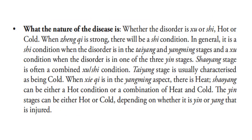What the nature of the disease is — whether the disorder is deficiency or excess, hot or cold. When zang qi is strong, there will be an excess condition. In general, it is an excess condition when the disorder is in the Taiyang and Yangming stages, and a deficiency condition when the disorder is on the three yin stages. Xiaoyang stage is often a combined deficiency-excess condition. Taiyang stage is usually characterized as being cold. When pathogenic qi is in the Yangming aspect, there is heat. Xiaoyang can be either a hot condition or a combination of heat and cold. The yin stages can be either hot or cold, depending on whether it is yin or yang that is injured.